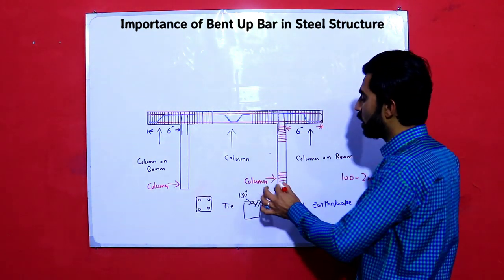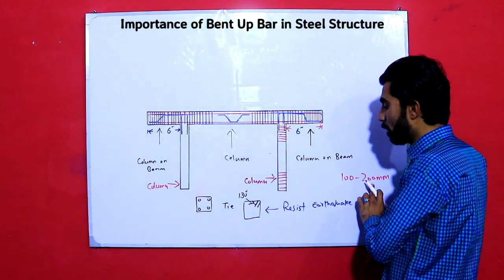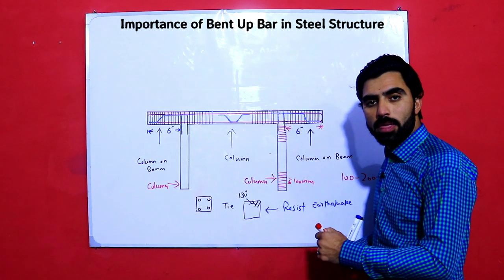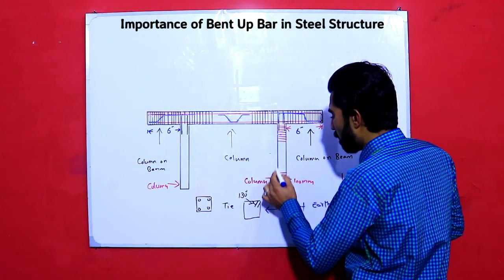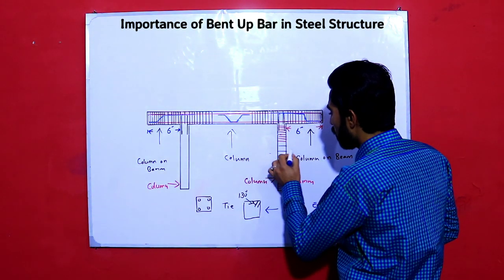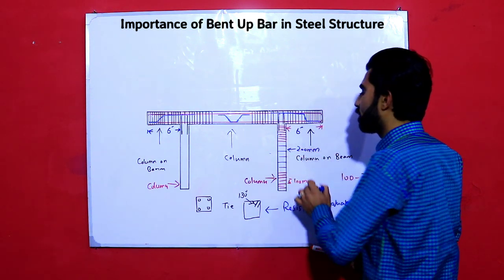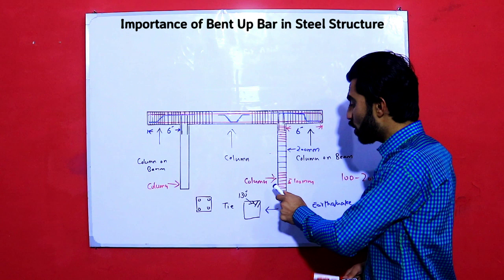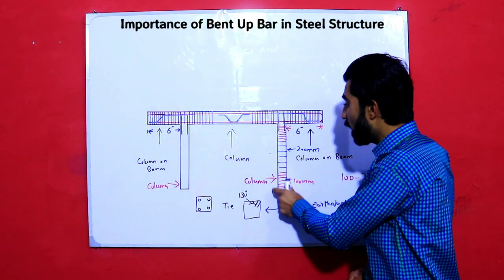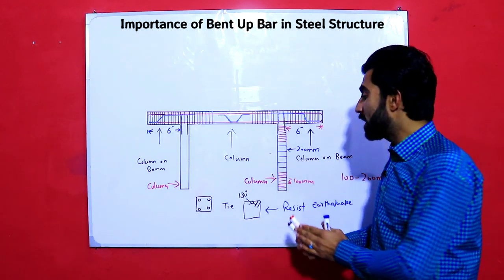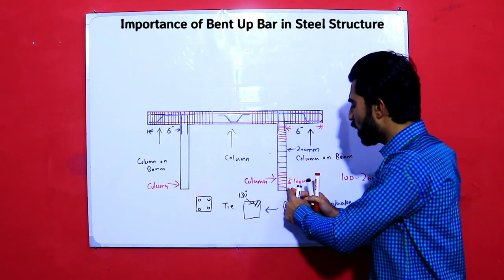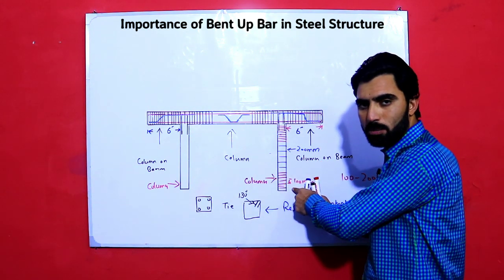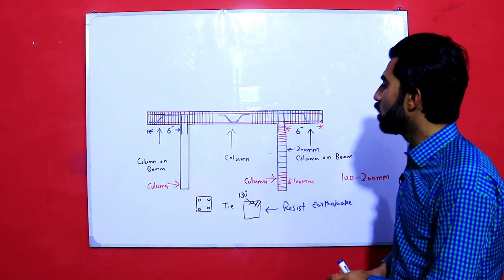The ties should be provided closely at the bottom, meaning if we have a ratio of 100 to 200 mm, at the bottom we will provide with spacing of 100 mm. But from the bottom toward the mid, we will provide it with spacing of 200 mm. Near its support there are more shear stresses, so at the bottom and at the top the ties should be closely spaced, but at the mid more space is used — two times the base spacing, meaning 200 mm.